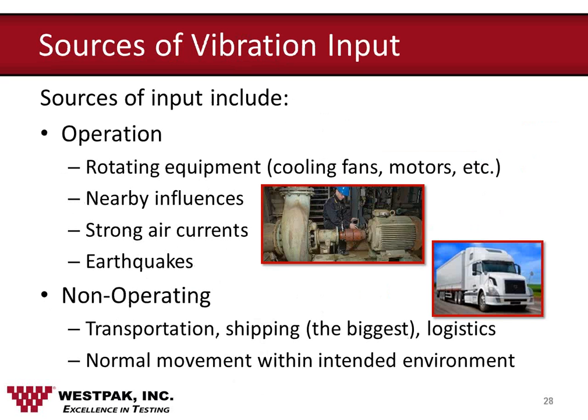Let's talk about the sources of vibration. When thinking about testing products for reliability or transportation-related purposes, it's important to determine where the vibration actually comes from. For most products, the operating environment is relatively benign in terms of vibration — most inputs coming from rotating devices such as fans or motors that are slightly out of balance. Sometimes the influence of nearby structures or equipment will cause some level of vibration input. Earthquakes represent a special type of vibration hazard that may occur in the operating or non-operating mode of the unpackaged product.